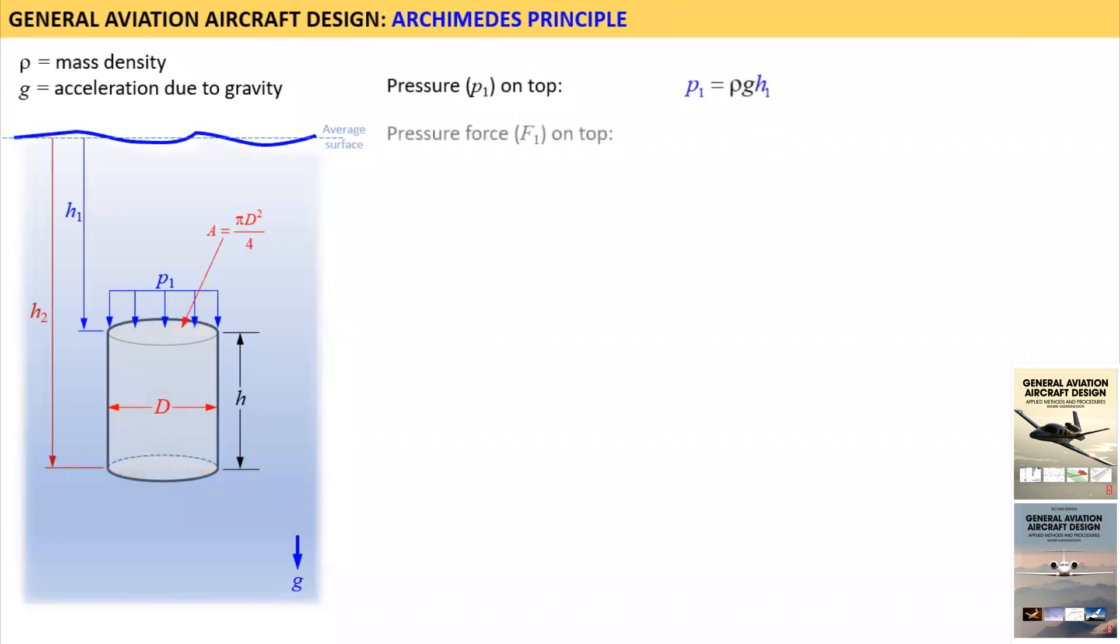Thus the pressure force F1 acting on the top is the product P1 times A as shown here. This can be expanded using the diameter of the cylinder as shown. Note that the pressure force always points perpendicular to a surface. Here this means that F1 points downward.